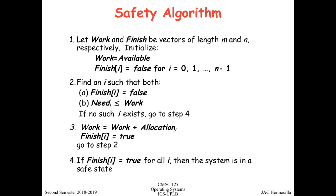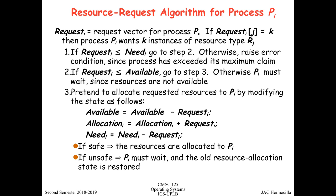The safety algorithm is called by the resource request algorithm. For process Pi, when process i requests resources, the request is represented as a request vector. The algorithm first checks whether request[i] is less than or equal to need[i], ensuring the request doesn't exceed what the process initially declared.